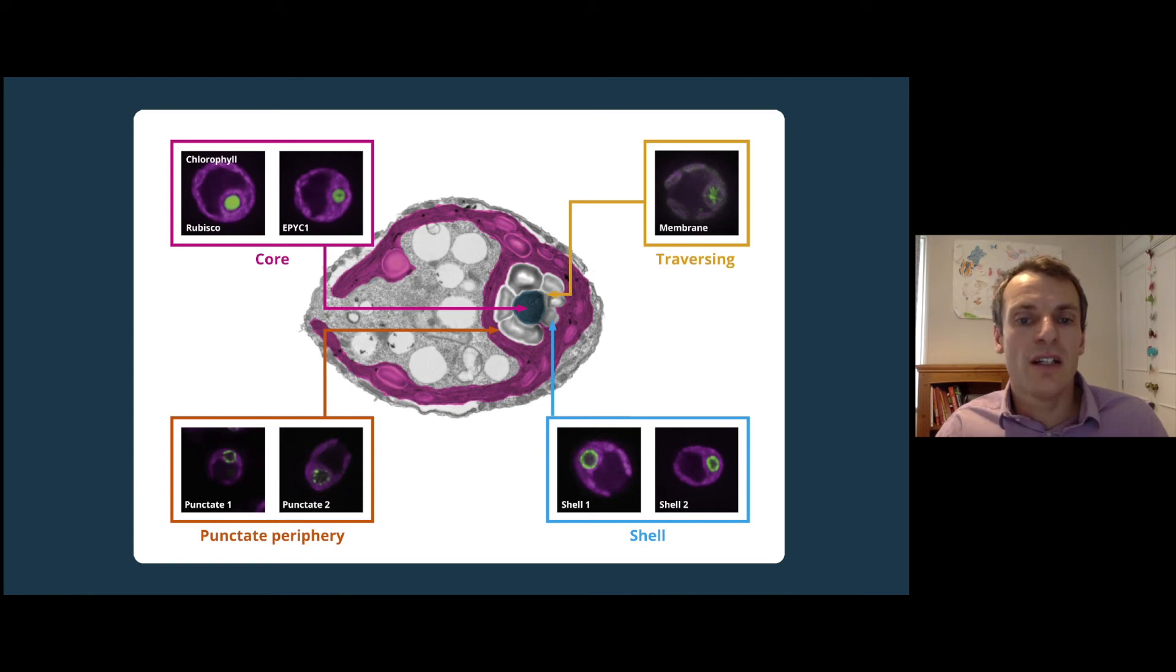to the periphery, including a punctate layer and a shell layer, and also proteins that traverse the pyrenoid.